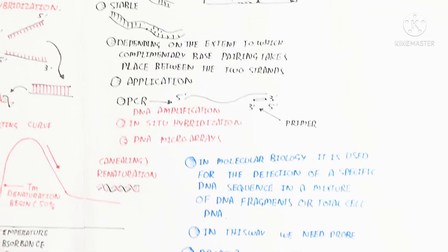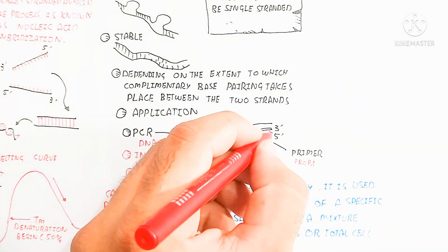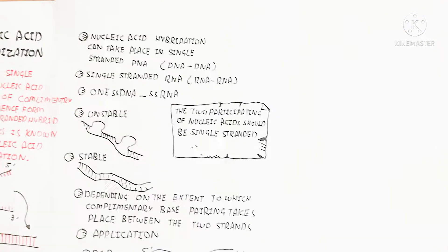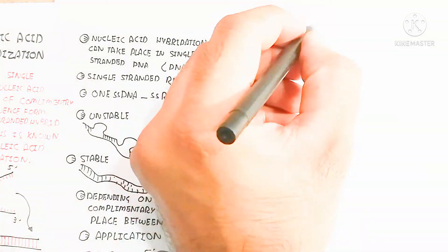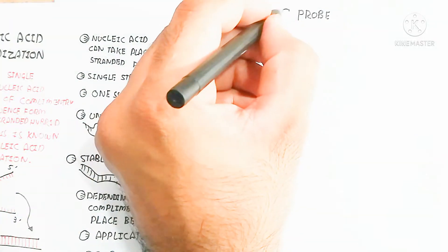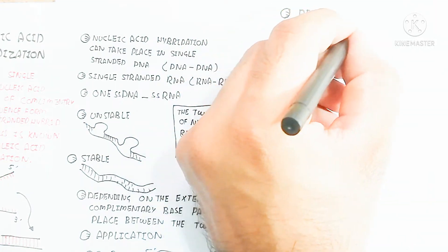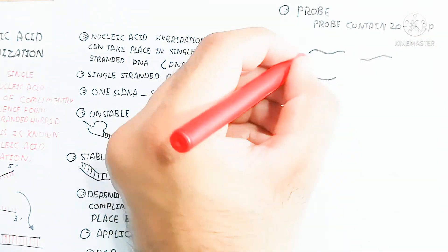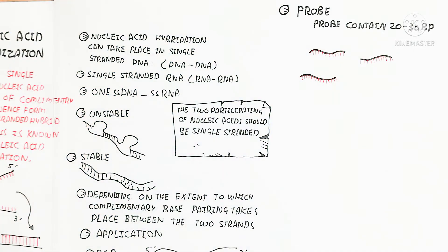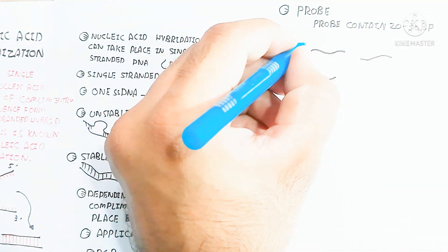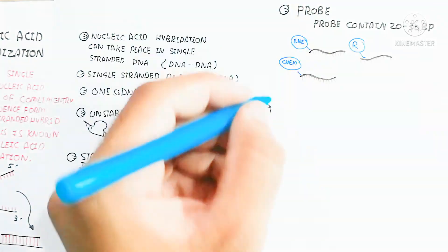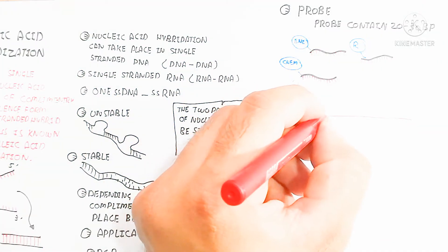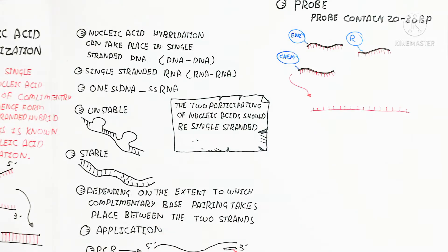Probes can be radioactive probes, enzyme-and-substrate reactive probes, or chemical-producing probes. In the case of the TaqMan probe, it is attached with a quencher as well as a color-producing substrate — when the quencher is detached, color is produced. A probe contains 20 to 30 base pairs that are complementary to the gene of interest.